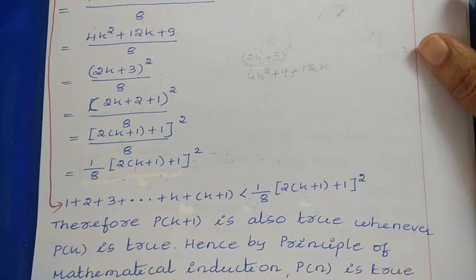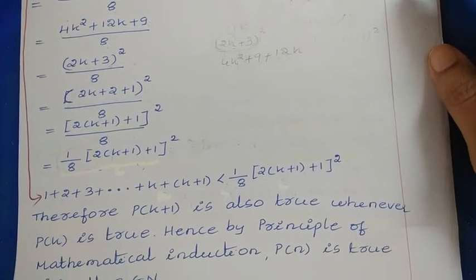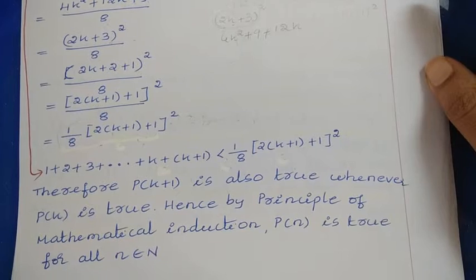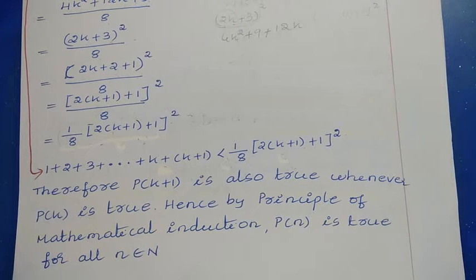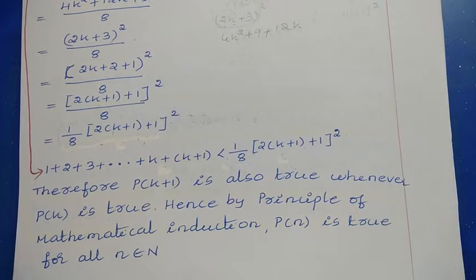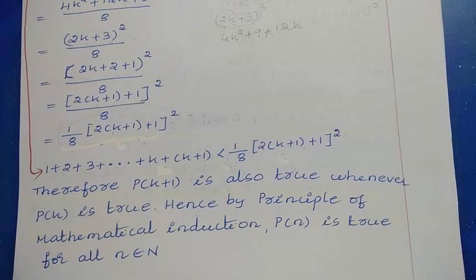We can now say that P(k+1) is true whenever P(k) is true. Hence, by the Principle of Mathematical Induction, the statement P(n) is true for all natural numbers. Note the change in method: in previous cases we took the LHS of P(k+1) and reached the RHS. But here, we directly took the assumed statement P(k) and by adding the term (k+1), we matched the value of P(k+1). These kinds of changes are needed when you have an inequality statement. If you like this video, please subscribe to the channel. Thanks for watching.